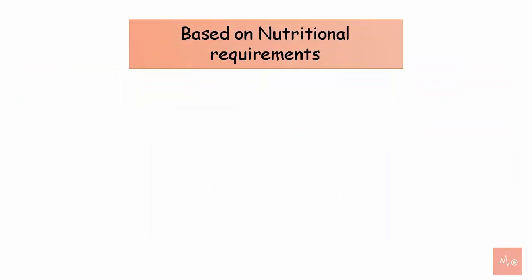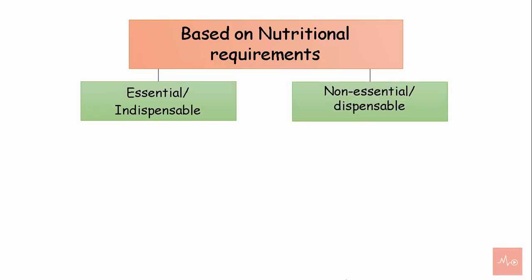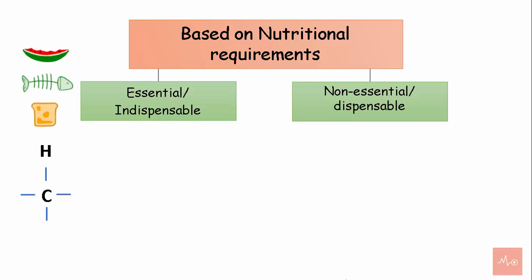Based on nutritional requirements, amino acids can be classified as essential and non-essential amino acids. Essential amino acids cannot be synthesized by the body, as the carbon skeleton of these amino acids is not produced internally. They need to be consumed via food for optimal growth and development. Non-essential amino acids can be synthesized by the body and need not be consumed via food. The body can synthesize 10 amino acids, which are non-essential.